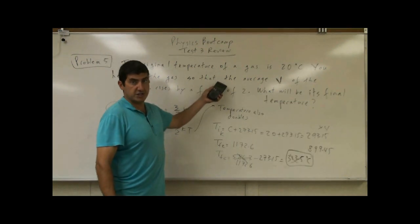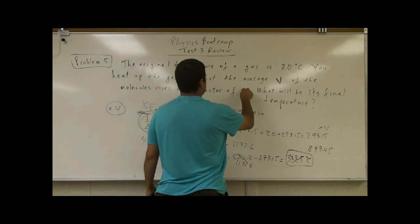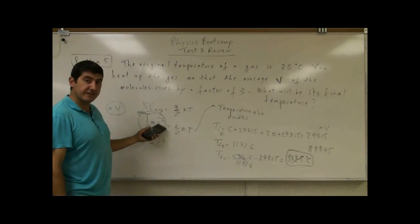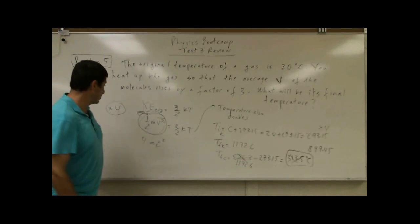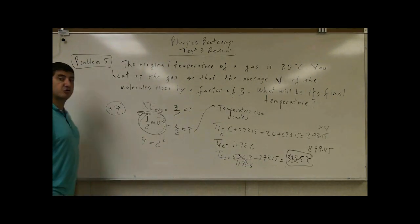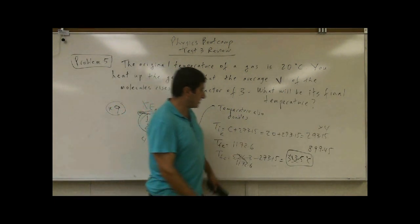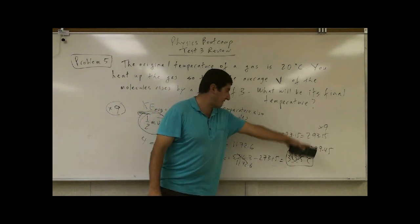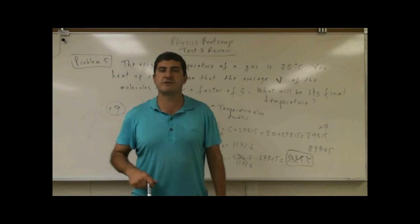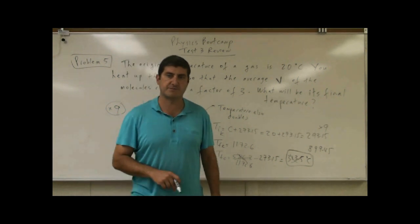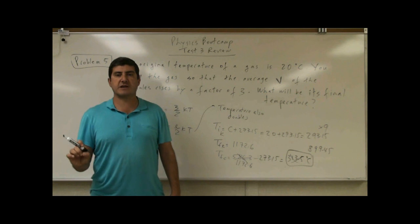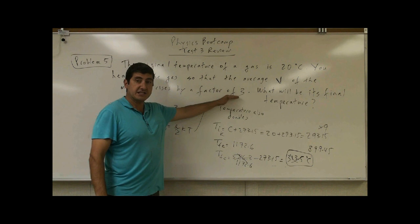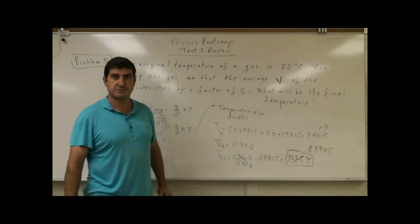You have to read the problem very carefully — whether it's the velocity or the kinetic energy that's changing. For example, if the velocity of the molecules rises by a factor of three, the kinetic energy multiplies by a factor of nine. Then you convert from Celsius to Kelvin, multiply by nine, get the answer, and convert back to Celsius. Make sure to convert to Kelvin and determine whether it's velocity or kinetic energy that's changing.